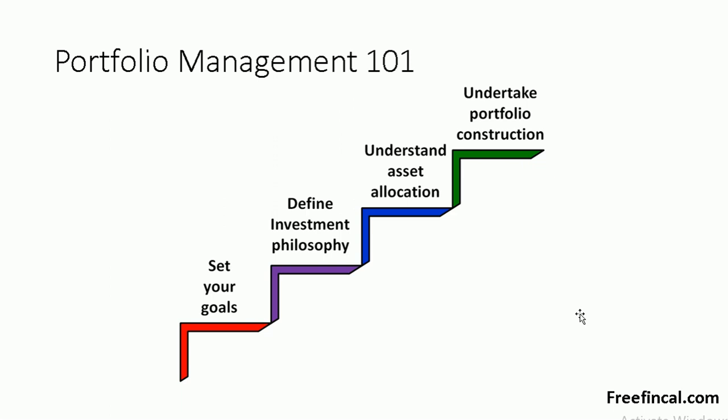The second is to understand the importance of asset allocation. Asset allocation is how much should I invest in each asset class — for example, 50% in equity and 50% in fixed income. Asset allocation helps us recognize the overall return for the portfolio, so we should understand it well.